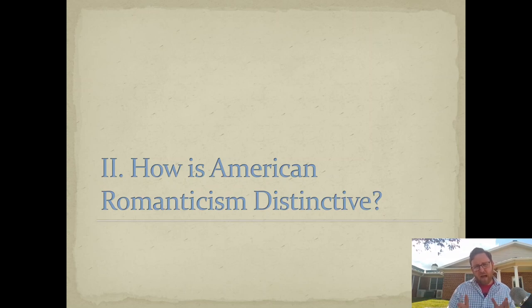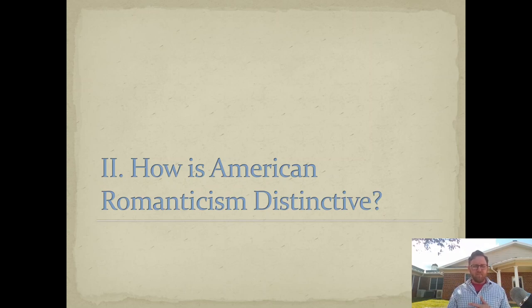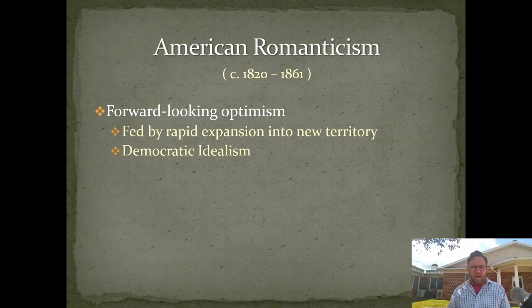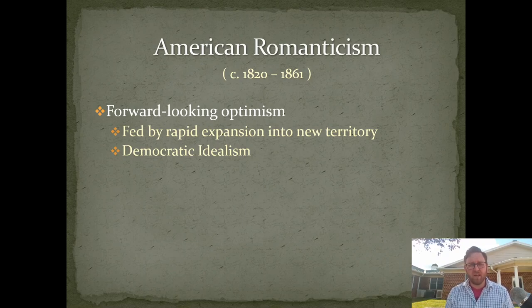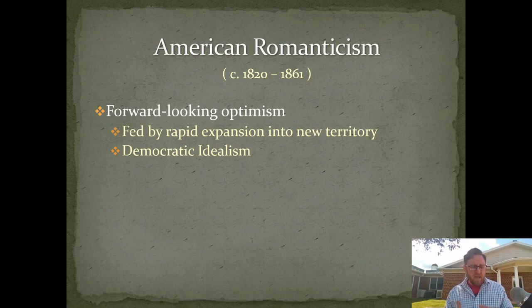Let's move on to the second part: how is American Romanticism distinctive — meaning, what makes it different from European or British Romanticism? These are things that really stand out in American Romanticism specifically. American Romanticism, for the most part, is energized by a forward-looking optimism — a forward-looking optimism that is fed by rapid expansion of the American nation into new territory. Look at the date range: 1820 to 1861. This is the era of the notion called manifest destiny.